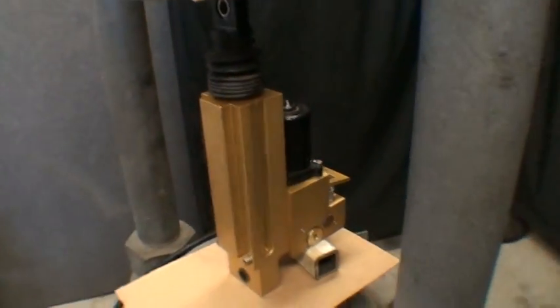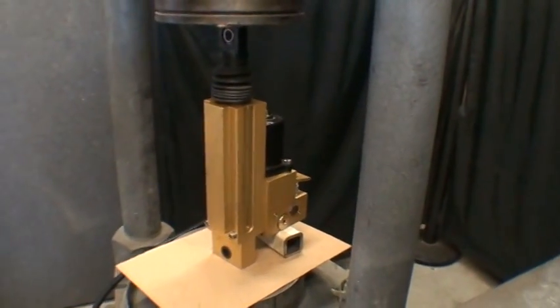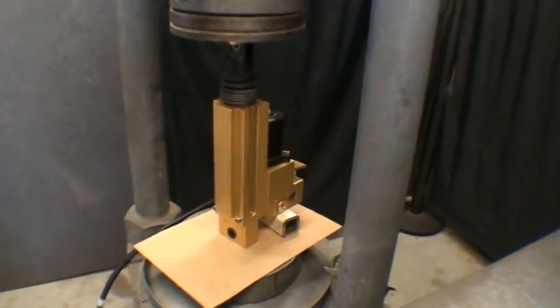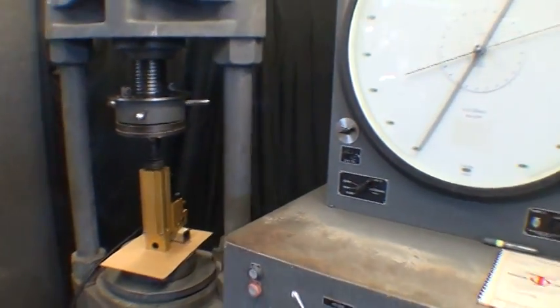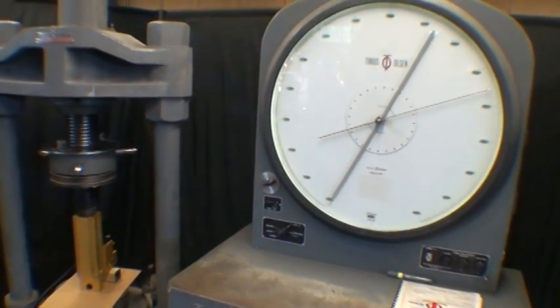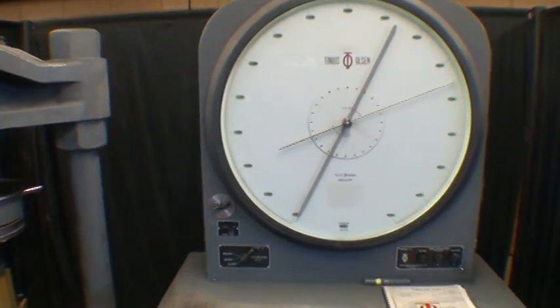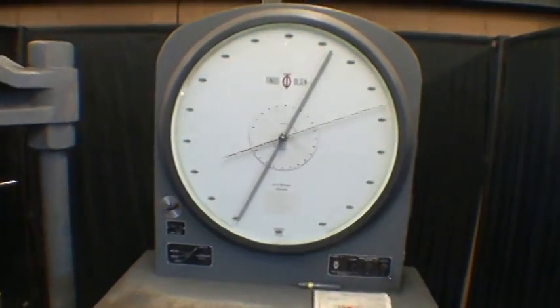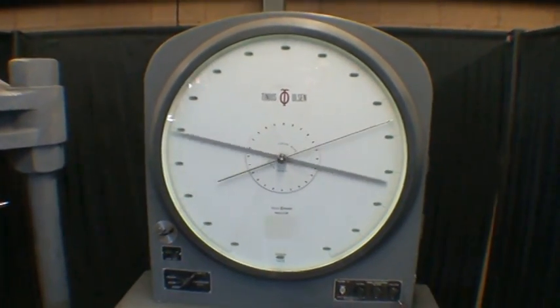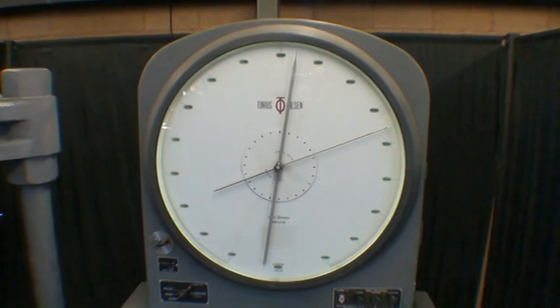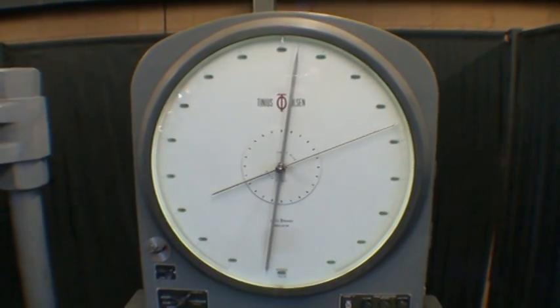This then raises and lowers the actuator rod. We just have it in a load frame to determine the force of the actuator because the actual specs aren't known. So we'll put 24 volts to it and see that it makes right around 8,500 pounds.